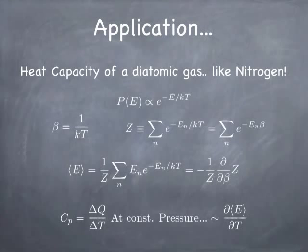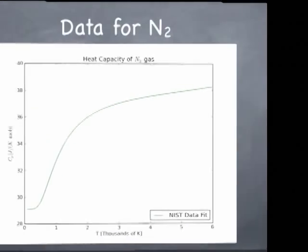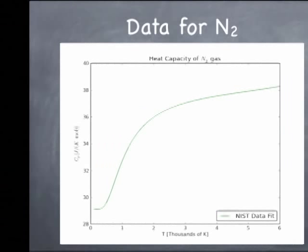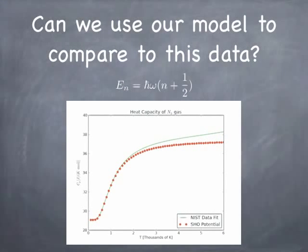The heat capacity is something you can measure in the laboratory. So it's an interesting way to check whether your concept of what energy states are available and what values they have holds any water. Here's some data collected about the heat capacity of nitrogen gas — diatomic nitrogen gas — as a function of temperature from the National Institute of Standards and Technology, NIST. And here is what it looks like if you model the nitrogen molecule as a simple harmonic oscillator.